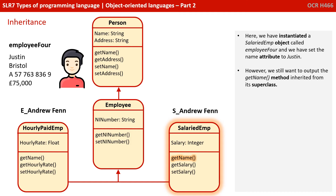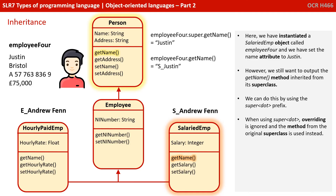Here we've instantiated a salaried employee object called employee4 and we've set his name attribute to Justin. However, we still want to output the getName method inherited from its superclass. We can do this by using super dot. When using super dot, overriding is ignored and the method from the original superclass is used instead. So employee4.super.getName outputs Justin, whereas employee4.getName uses the overridden version: S_Justin.